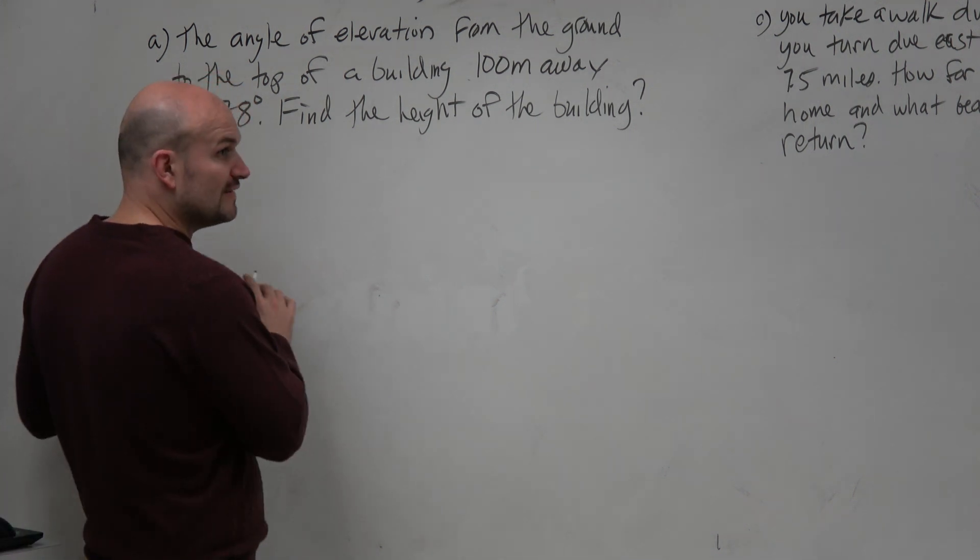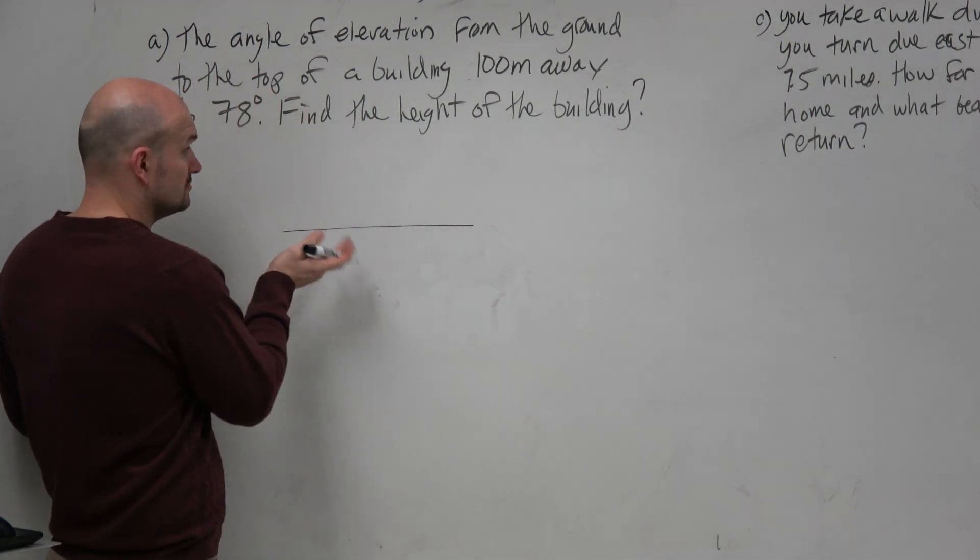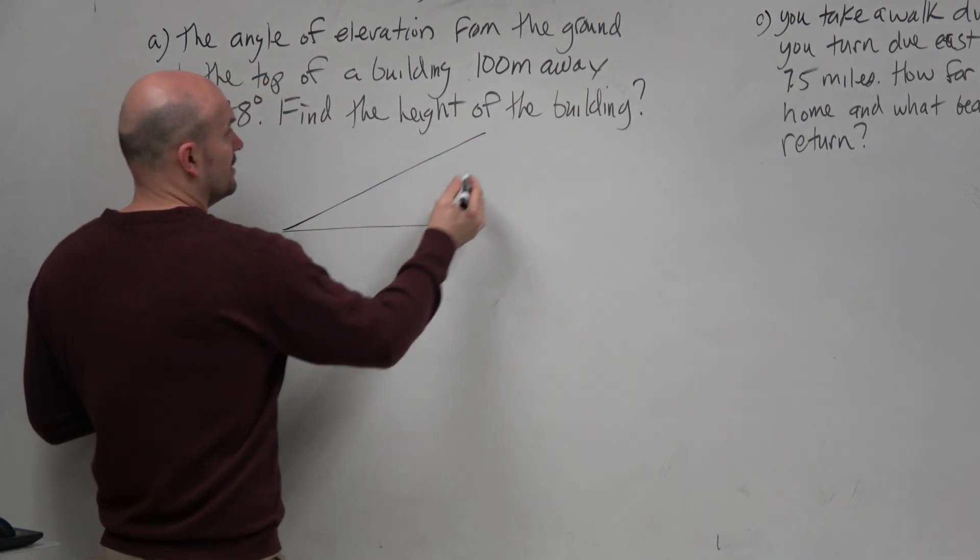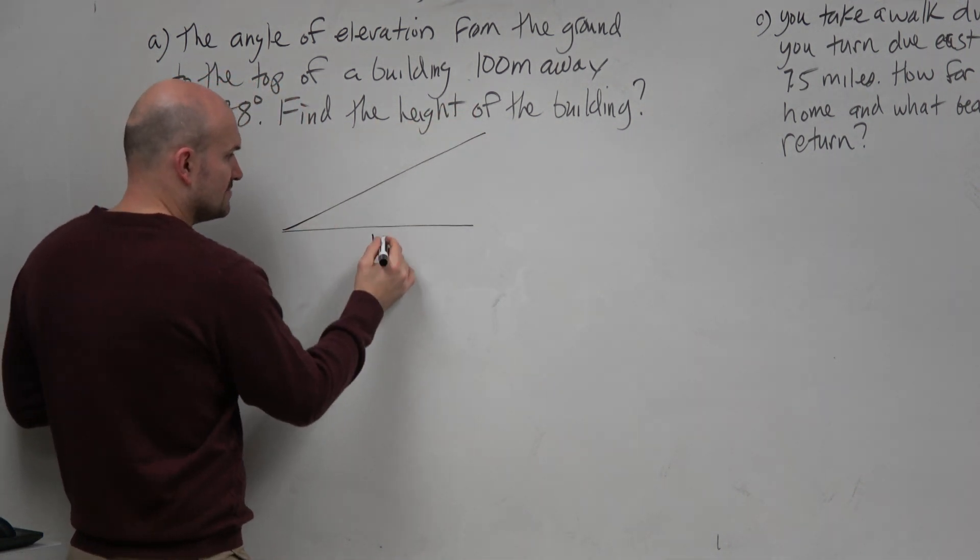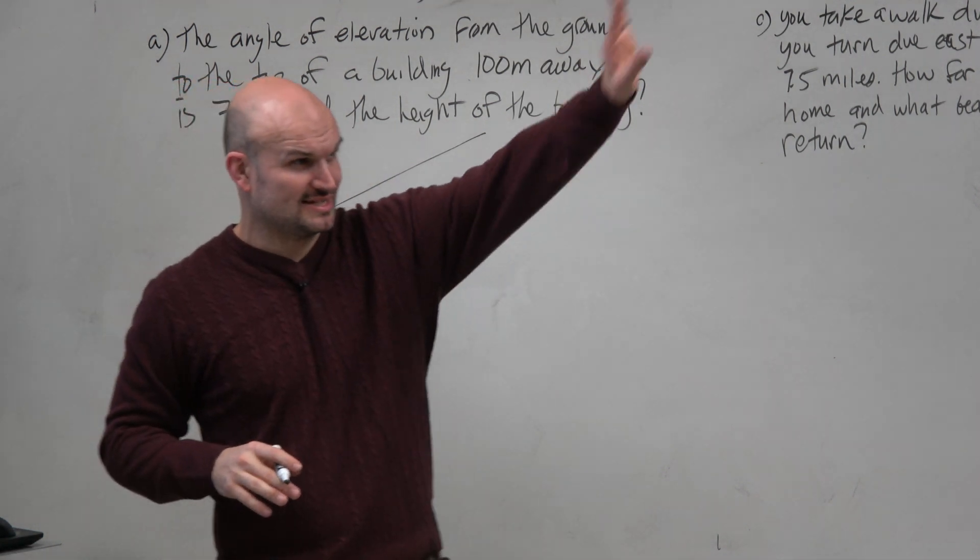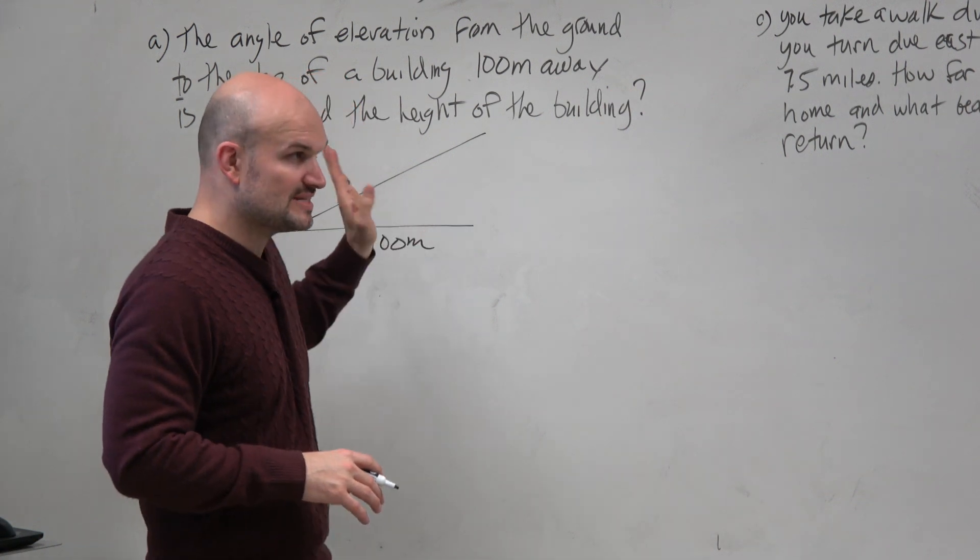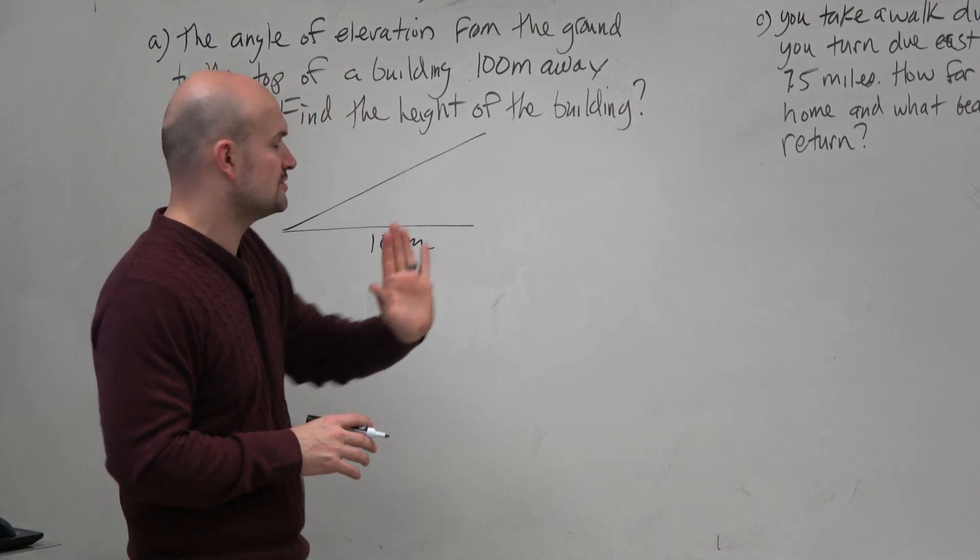is we have an angle of elevation. That means we have a horizontal, right? Angle of elevation to the top of a building which is 100 meters away. So we measure distance horizontally. We don't usually, unless it's saying like a direct distance to the top of the building, which it doesn't, usually when we say something's 100 meters away, we're going to do horizontal distance.